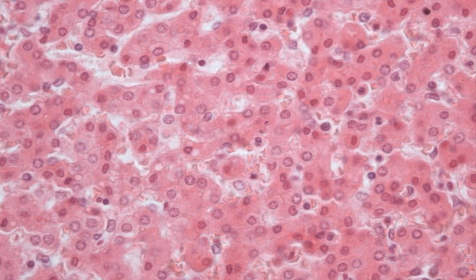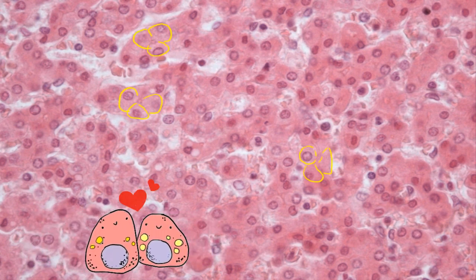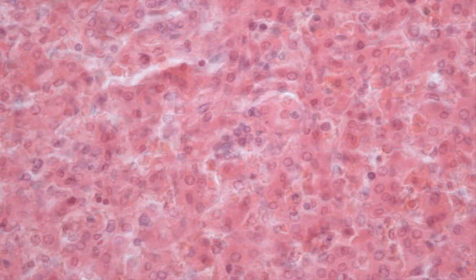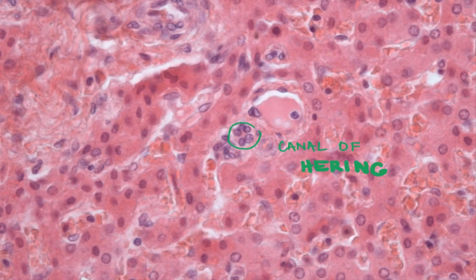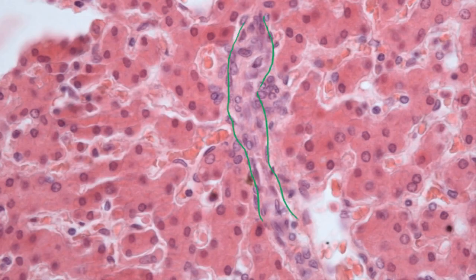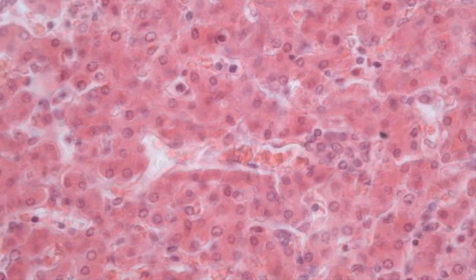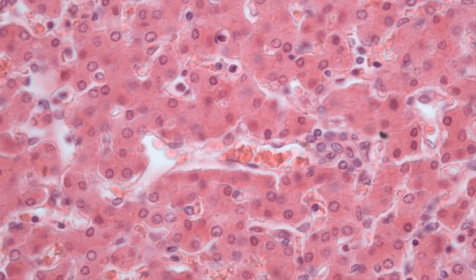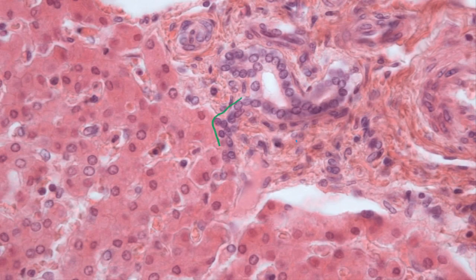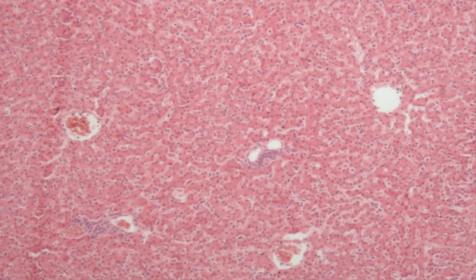We have already mentioned that bile is produced by hepatocytes. These cells bind together and form a system of tubes which transports the bile. Intercellular bile canaliculi are one to two micrometers thick and are surrounded by the membranes of hepatocytes. From these smallest tubes, bile enters the canals of Hering, which have their own epithelial lining. We can see both transverse and longitudinal sections. Here we can see canals of Hering close to the circumlobular vein. Bile from the portal lobule is drained by the interlobular bile duct in the portal spaces.